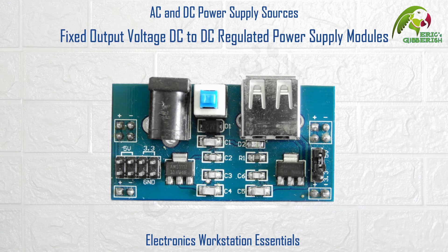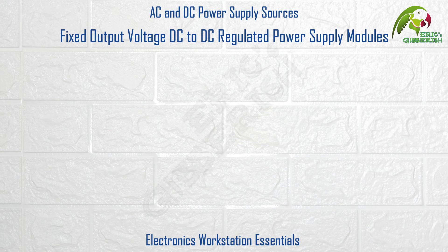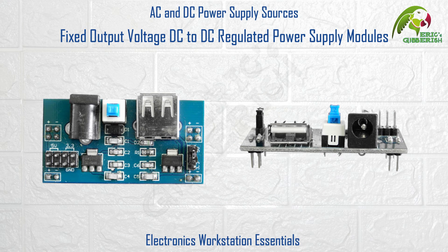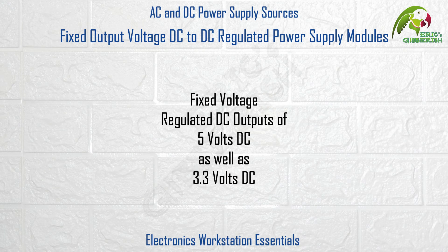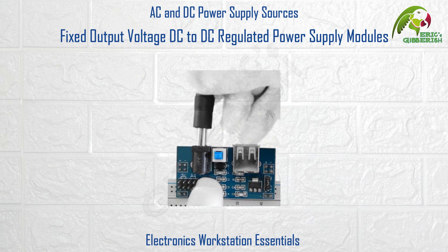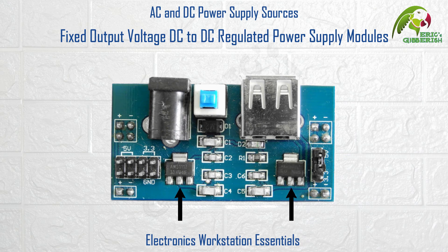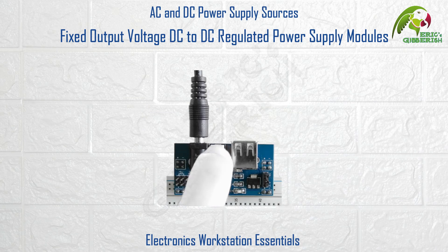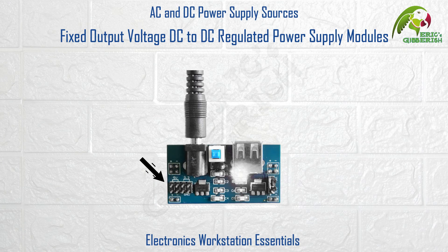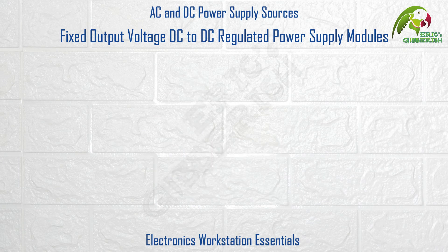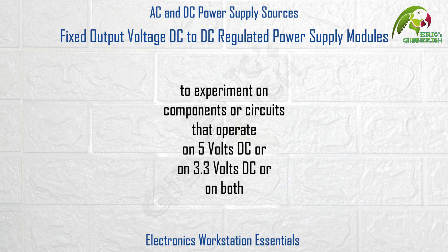Fixed output voltage DC to DC regulated power supply modules. This particular module is an example of a DC to DC power supply that has fixed voltage regulated DC outputs of 5V DC as well as 3.3V DC. It takes an input of anywhere between 9V to 12V DC and regulates the outputs using two linear series regulators. It has an on-off switch too and the outputs are made available on these BURG pins. It's a very handy module to experiment on components or circuits that operate on 5V DC, 3.3V DC, or on both.